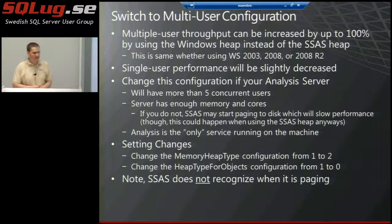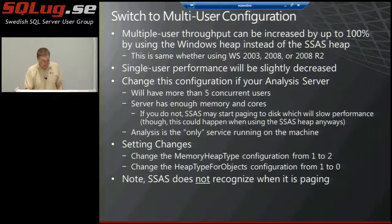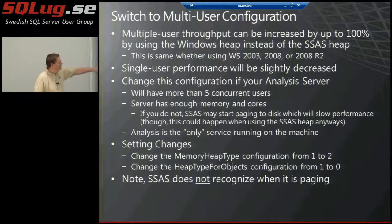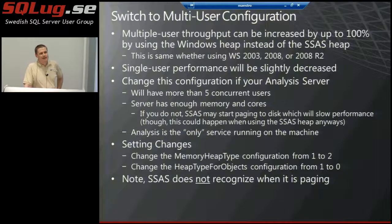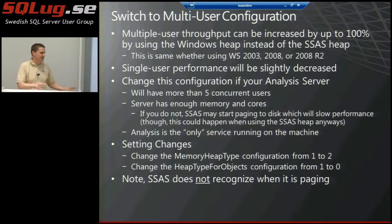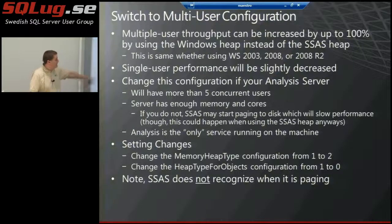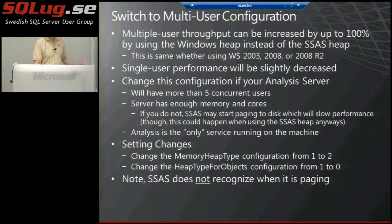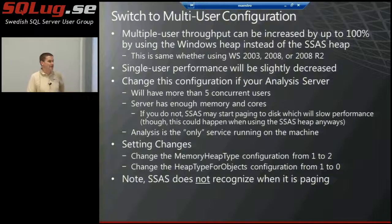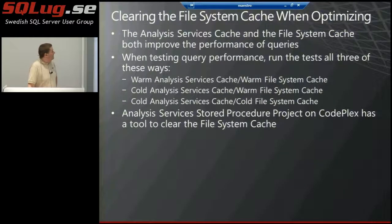Why is the analysis server configured out of the box to work best with five or fewer users? That's a hard question to answer. The slides are already up on the site, so you don't have to write down all these details. Any time you do configuration on analysis services, it's important to test before and after — did this change really help? But this is a recommendation the SQL CAT team is pretty strong about: just go ahead and do it. It's almost always better if you have more than five users.